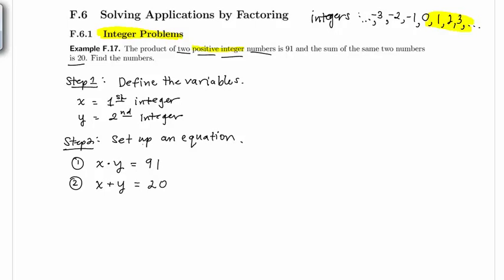Looking at these two equations more closely we can use our techniques from module C and see that if I solve the second equation for y then I can substitute in what y equals into the first equation. So if I subtract x from each side I would get y equals 20 minus x.